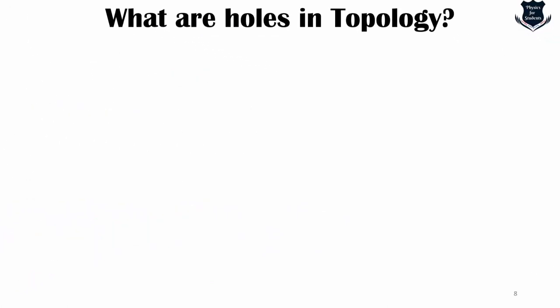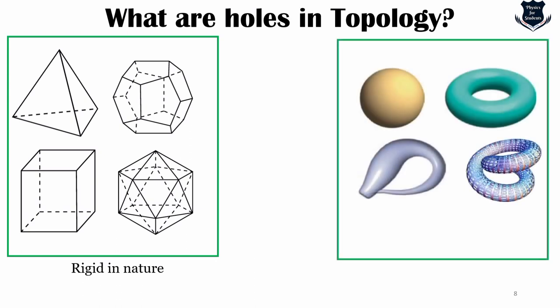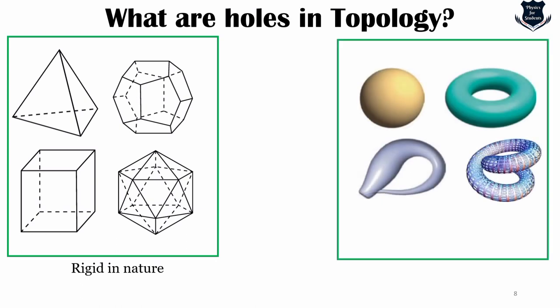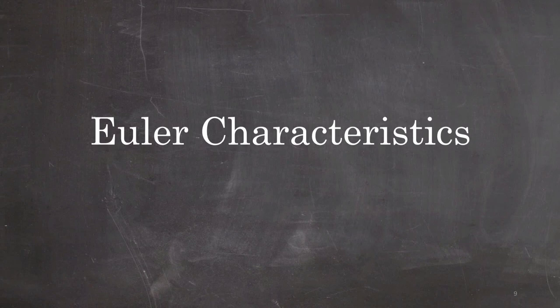When we talk of shapes like a tetrahedron, cube, octahedron, dodecahedron, or icosahedron, these are very rigid objects. The tools of trade are lengths, areas and angles. But in topology, shapes are flexible — as if made of rubber. A topologist is free to stretch and twist a shape. Even cutting and gluing are allowed as long as the shape is precisely re-glued. So a sphere and a cube are distinct geometric objects, but to topologists they are indistinguishable. This leads us to something very central to topology: the Euler characteristic.